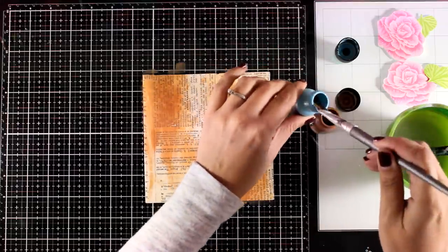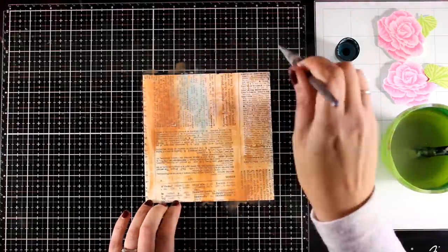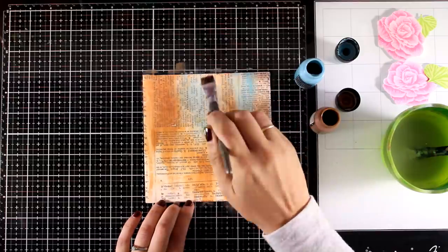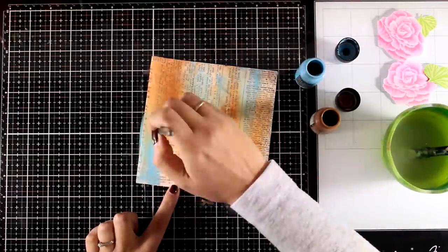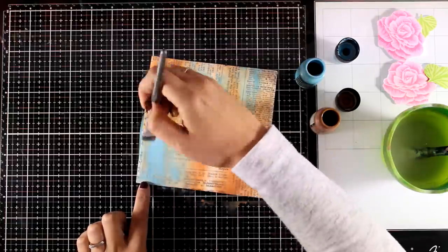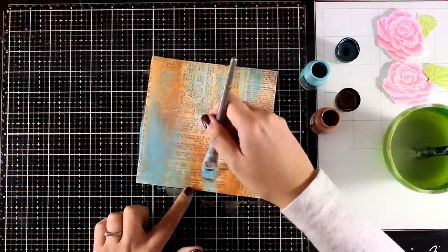So you see depending on how much water I have on my brush it is kind of translucent in some areas and goes more opaque in others. Now the brown color that I used is vintage photo and now I am going with blue which is broken china.